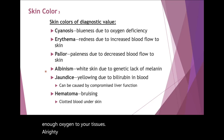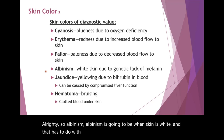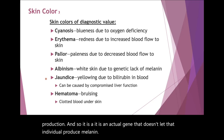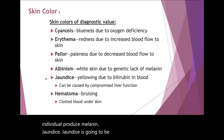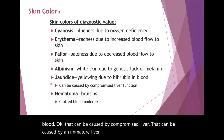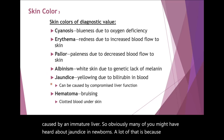Albinism is when skin is white due to a genetic component — a gene that doesn't let the individual produce melanin. Jaundice is going to be due to a buildup of bilirubin in the blood, which can be caused by a compromised liver or an immature liver. Many of you might have heard about jaundice in newborns — a lot of that is because of an immature liver.